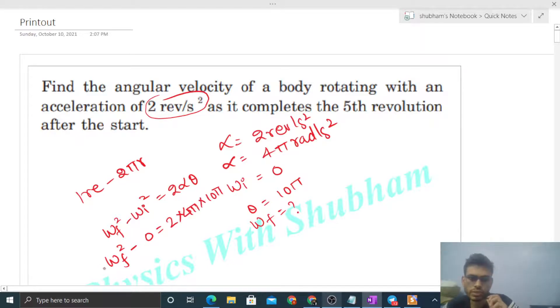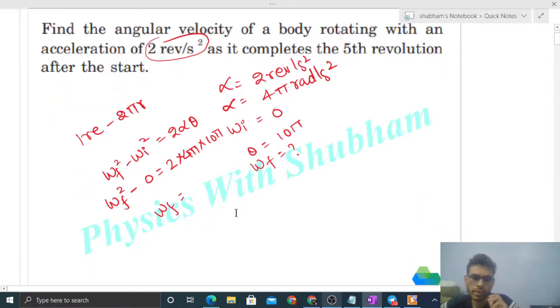Check what is the value of omega final. That will be under root of 80π square. So that is 4π square into root 5, sorry, 4π into root 5. This is the value of final angular velocity, that is in radians per second.